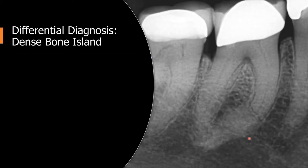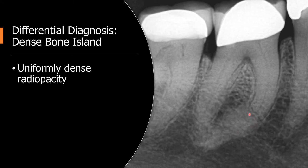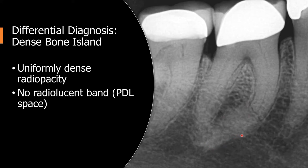Let's review dense bone island. You may easily identify a dense bone island based on its radiographic features. Dense bone island or idiopathic osteosclerosis is an area of uniform density. This radiopacity has no radiolucent band — nothing similar to a periodontal space. As in this case, there may be some root resorption.